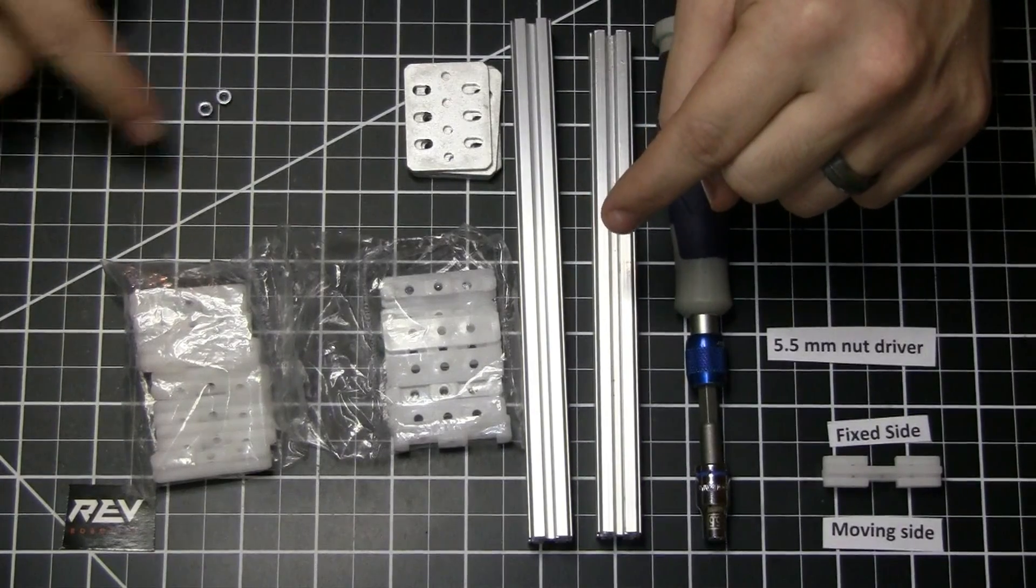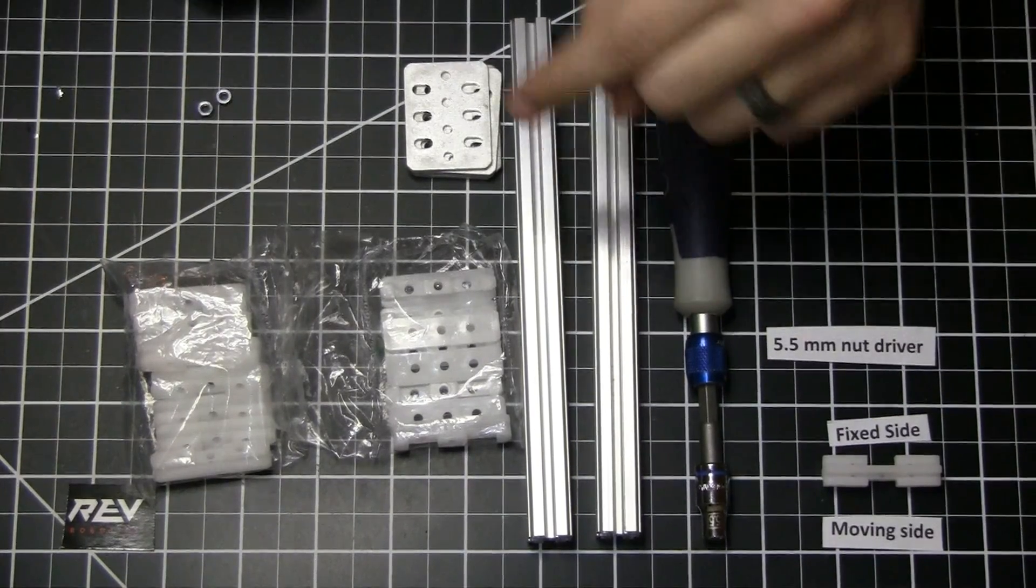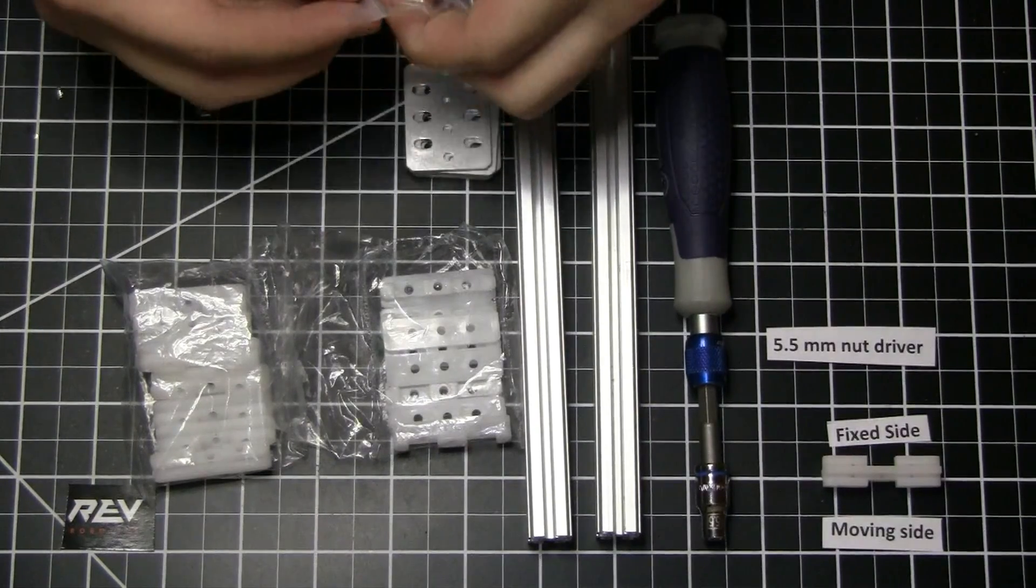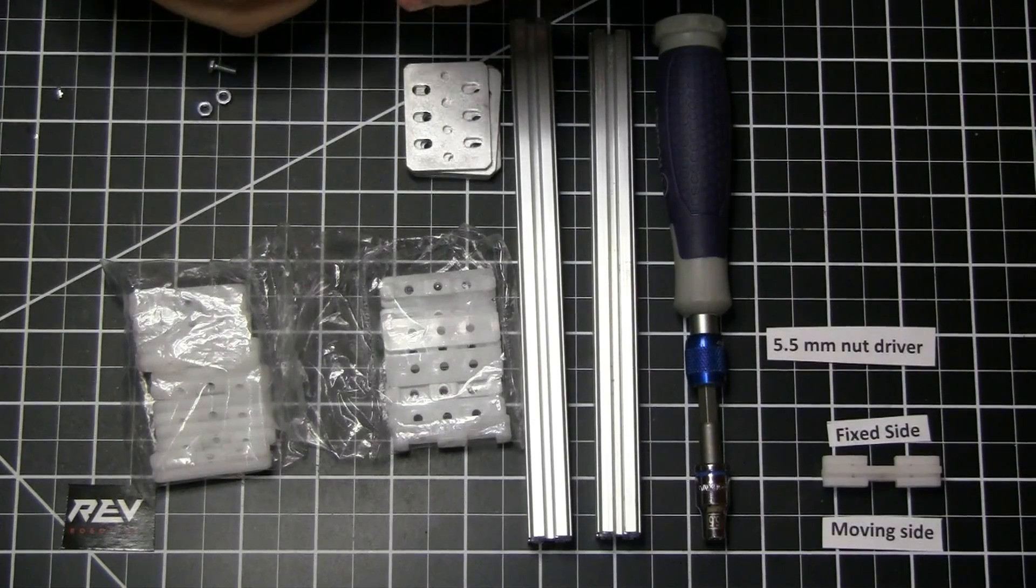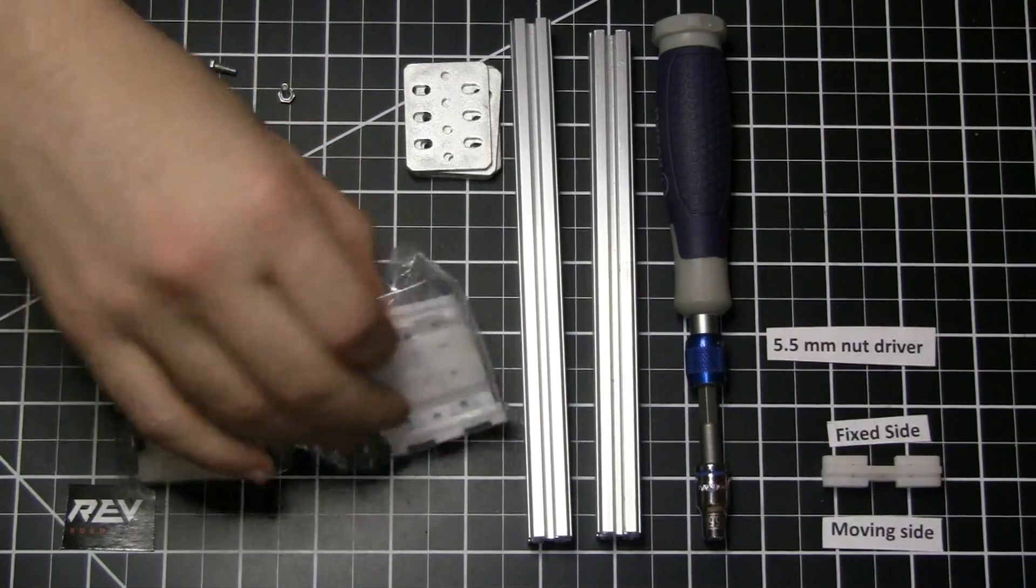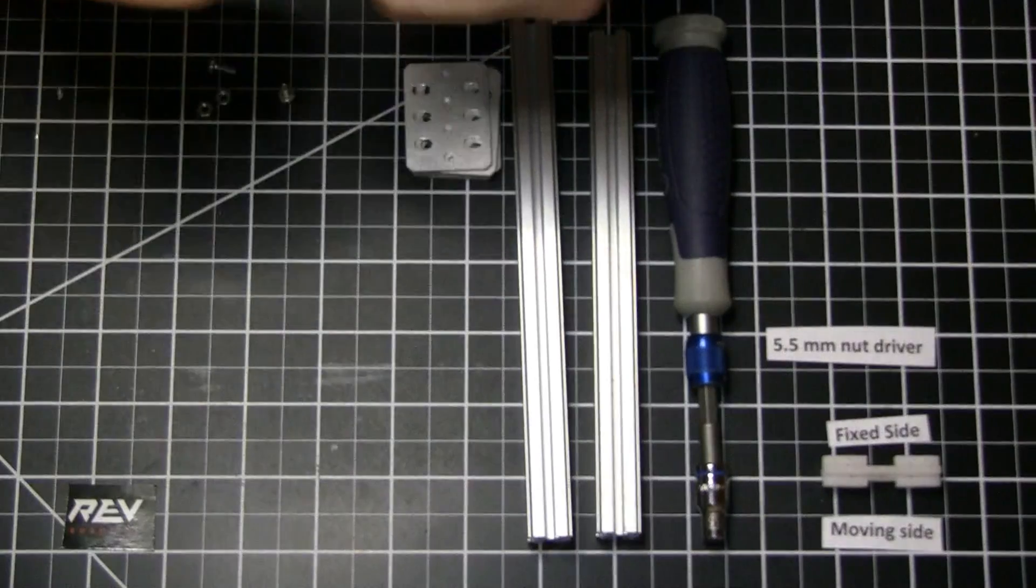All we'll need for this quick demonstration is two of the eight millimeter length screws, two of the regular nuts, and two of the in-between slider plates.